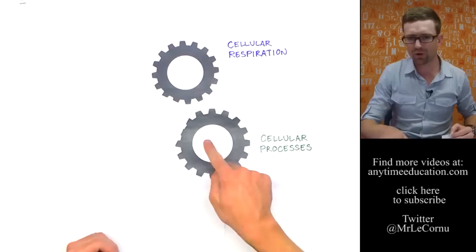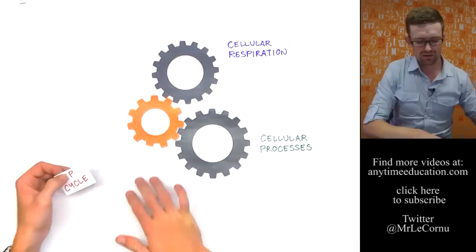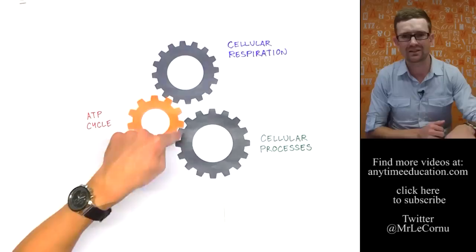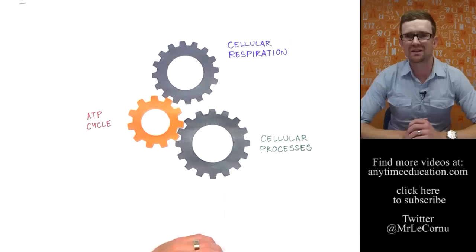So without the ATP cycle, cellular processes can't occur, even though cellular respiration provides energy. It's a chain of events that is really important. And the ATP cycle fits in that really important space. So guys, that's been the ATP cycle. I hope that I've helped you to understand what it is and why we need it in ourselves.